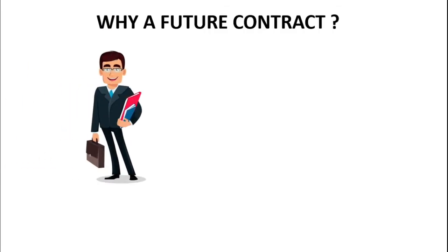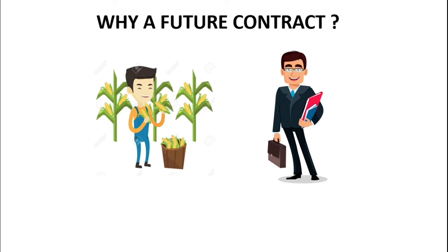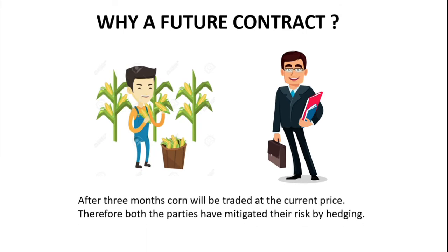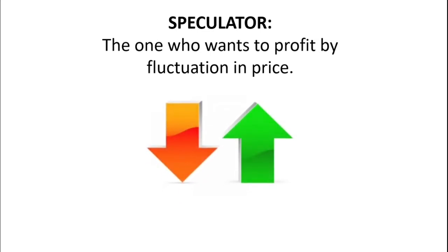Now the question is: why a futures contract? The reason is very simple — the corn is to be harvested after three months and would trade at the current price, that is 100 rupees. Here both the farmer and Kellogg's would be called hedgers, as they have now mitigated their risks.